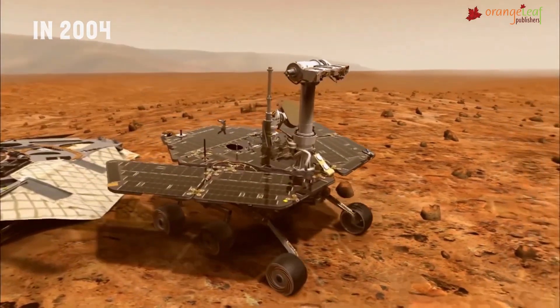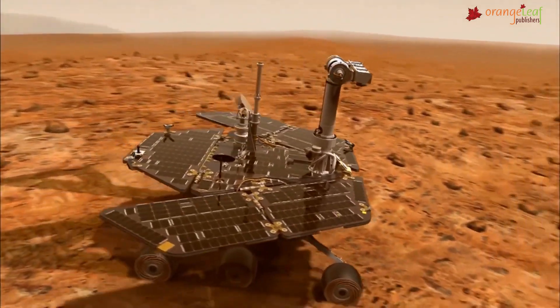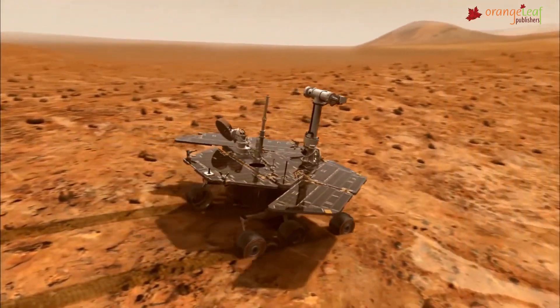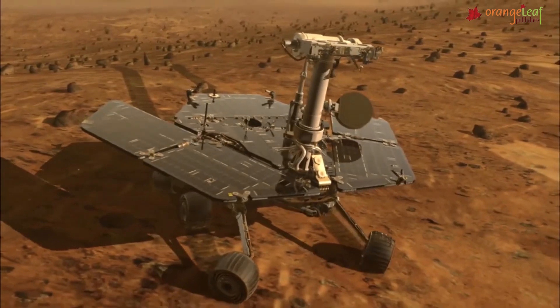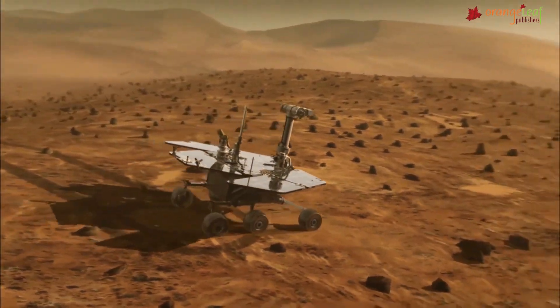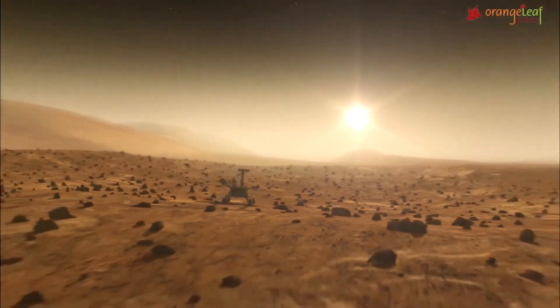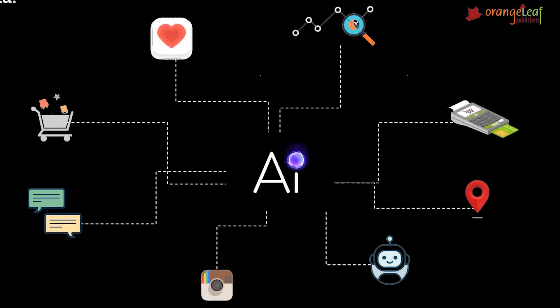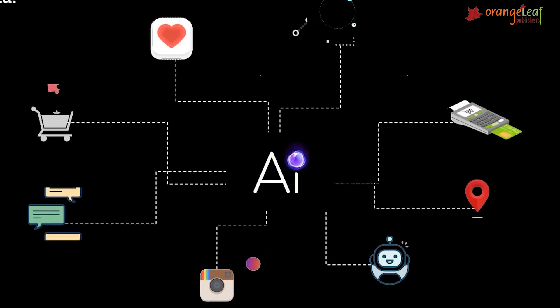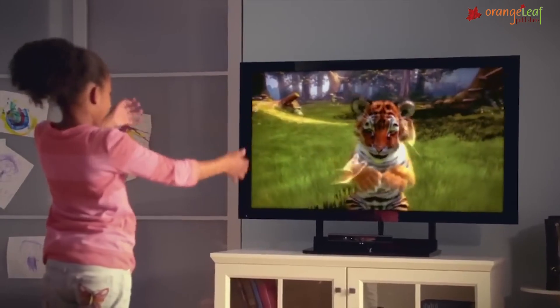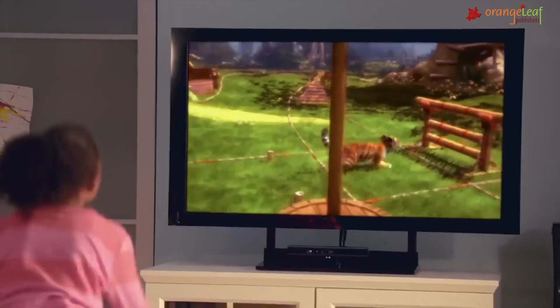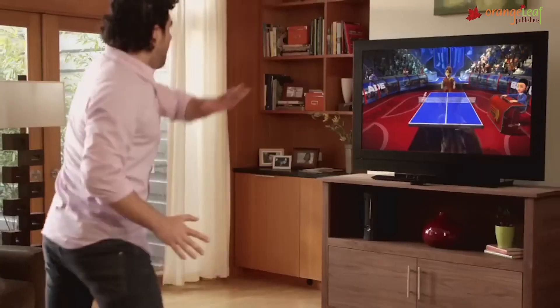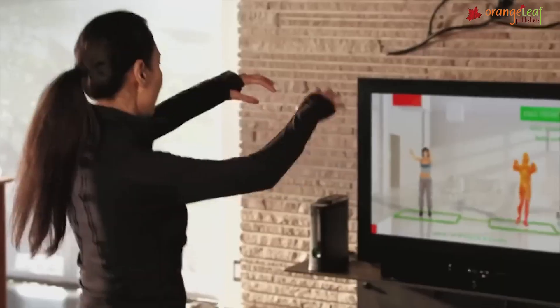The 2004 NASA Mars Exploration Project was a robotic space mission involving two Mars rovers, Spirit and Opportunity, to investigate the Red Planet. Microsoft unveiled Kinect for Xbox 360, the first gaming gadget capable of tracking human movement utilizing a 3D camera and infrared sensing.